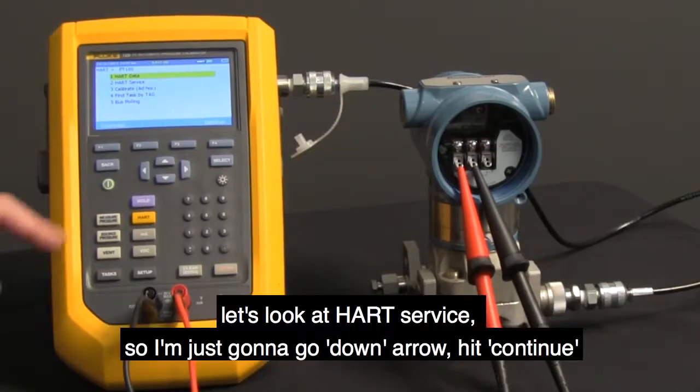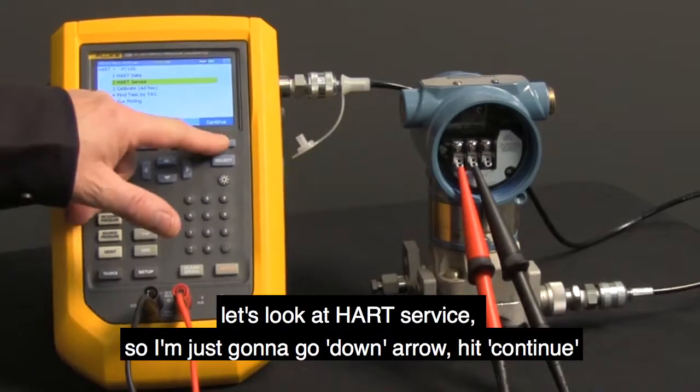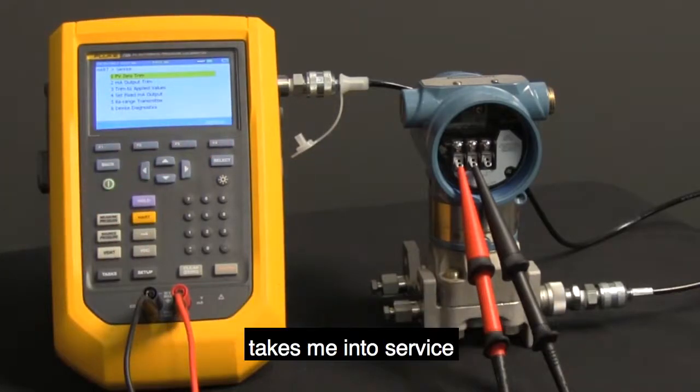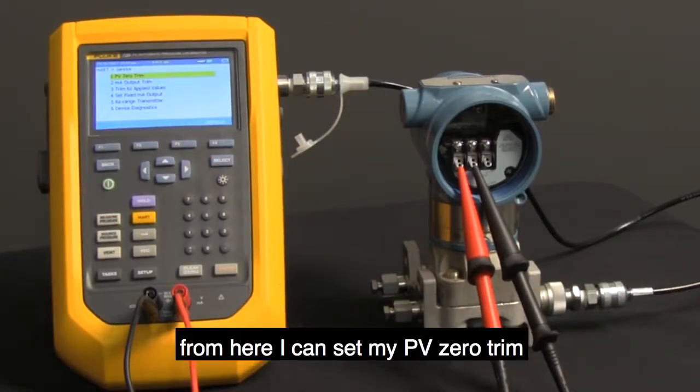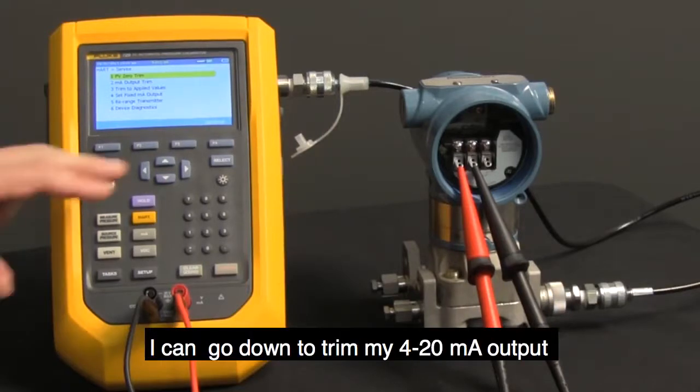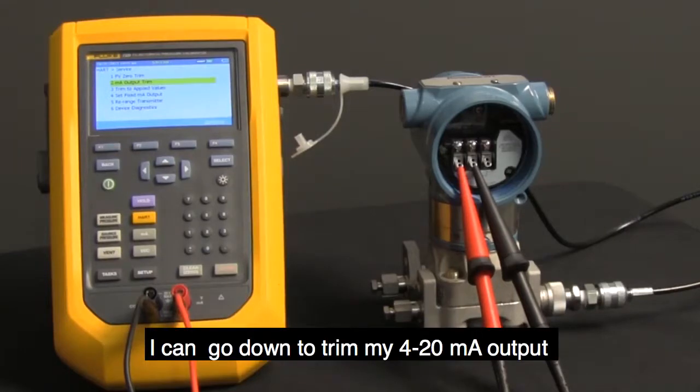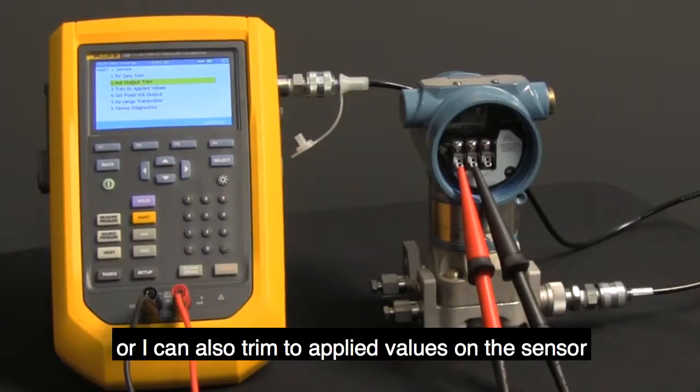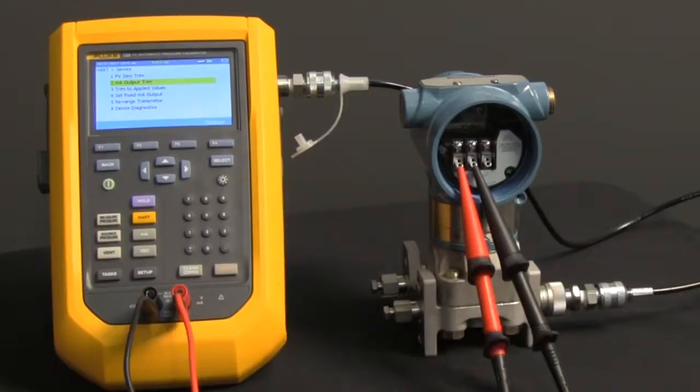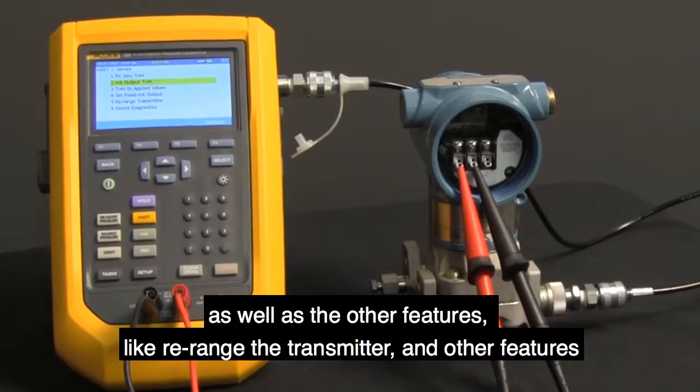Let's look at HART service. So I'm just going to go down arrow, hit continue. It takes me into service. From here, I can set my PV0 trim. I can go down to trim my 4 to 20 milliamp output, or I can also trim to applied values on the sensor, as well as the other features like rearranging the transmitter and other features.